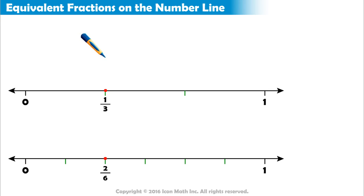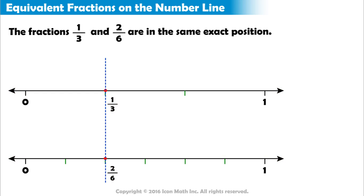Now if we draw a straight line and go downwards from the point one-third on the first number line, we will get to the point two-sixths on the second number line. Since the two number lines are equal in length, then these two fractions are in the same exact position.